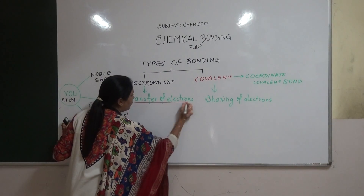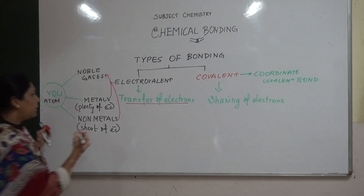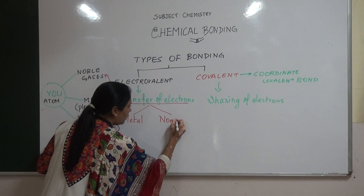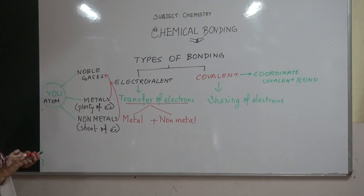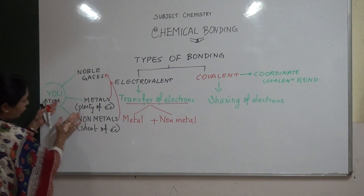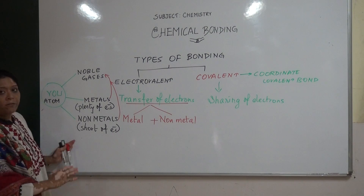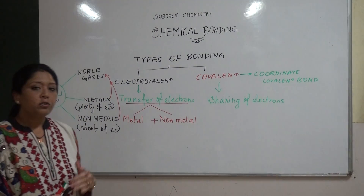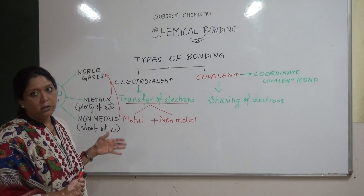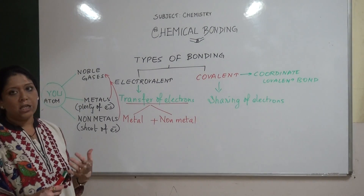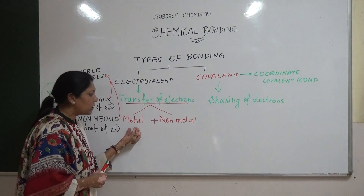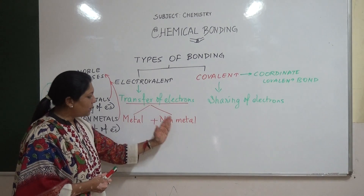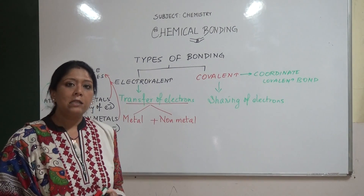When the transfer of electrons happens to form a bond, the bond would be between one which has a lot of electrons and another which has a shortage of electrons — always a bond between a metal and a non-metal. Since metals have plenty of electrons and non-metals have a shortage, a bond between a metal and a non-metal is formed by transfer of electrons. When electrons are transferred from a metallic atom to a non-metallic atom, this type of bonding is called an electrovalent bond.